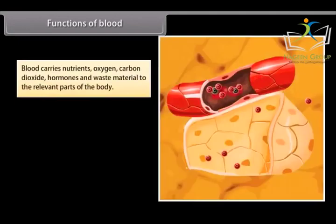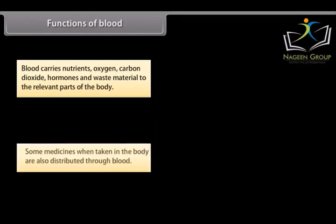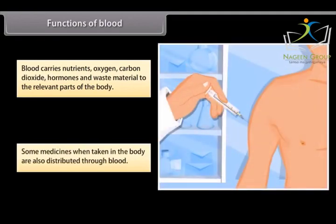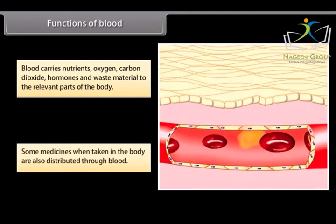Functions of blood: Blood carries nutrients, oxygen, carbon dioxide, hormones and waste material to the relevant parts of the body. Some medicines when taken in the body are also distributed through blood.